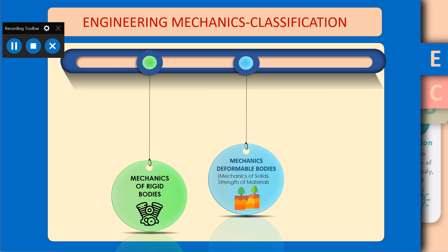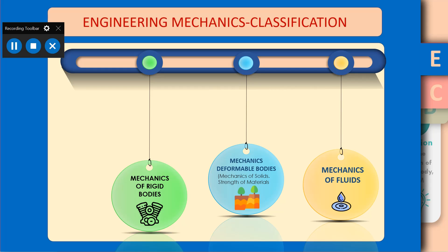The second type is mechanics of deformable bodies, also known as mechanics of solids or strength of materials. In this part, when a force acts on a body, it will deform or change its shape. For example, when we apply force on an eraser or rubber, it deforms — such bodies are called deformable bodies. The third type is mechanics of fluids, or simply fluid mechanics. Fluids include any kind of gases or liquids. The study of forces acting on such bodies and their motion or deformation is known as mechanics of fluids.